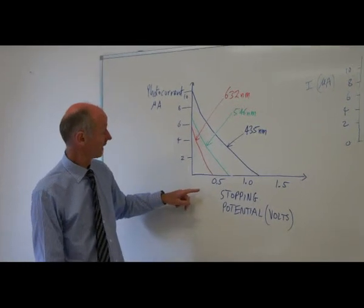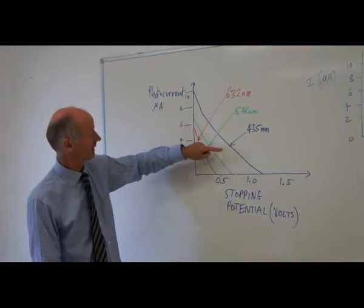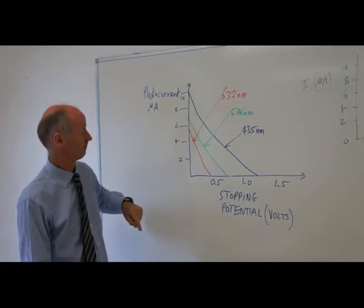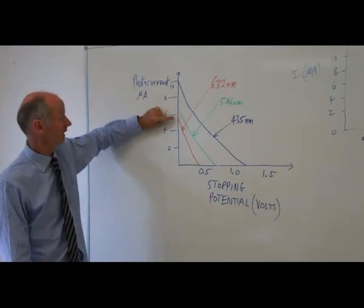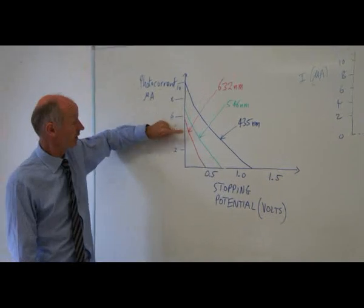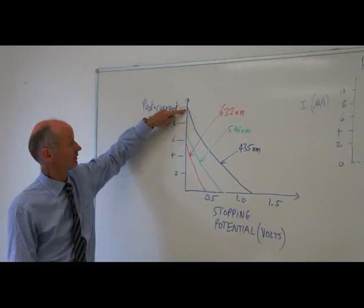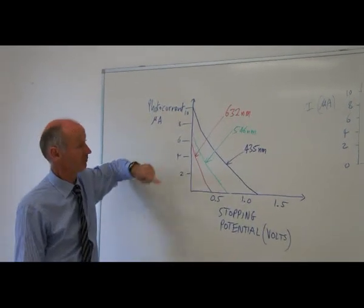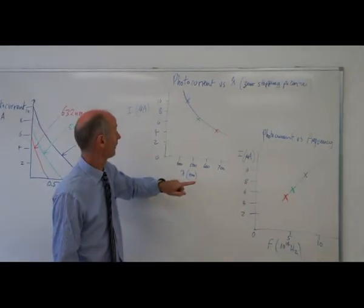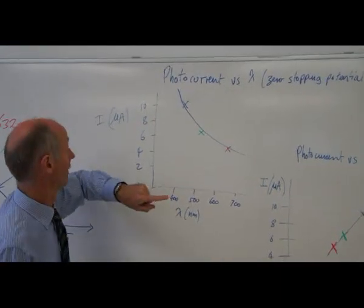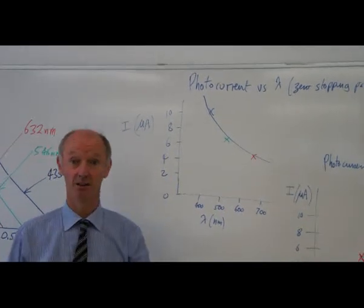As we decrease the stopping potential, the currents increase. I've looked at what happens to the current when there is zero stopping potential for the red, green, and blue light, and plotted those three data points. For the red light at this longer wavelength, we have a smaller current. For the green light, a bigger current, and for the blue light, a larger current.